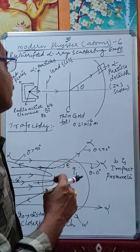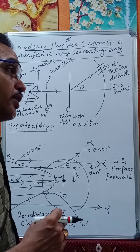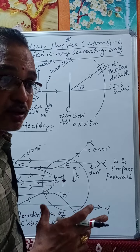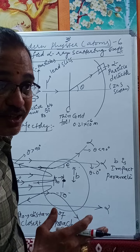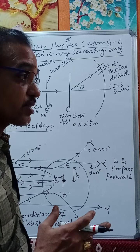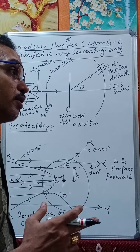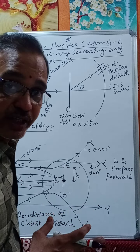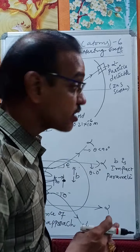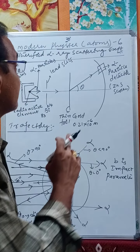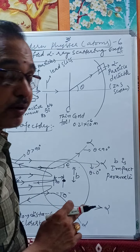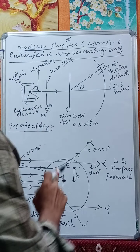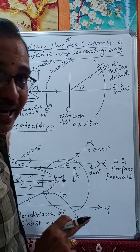In the last class, lecture 5, we discussed the various spectral lines, number of transitions, drawbacks, and the fine structure constant. Now let us see Rutherford's alpha ray scattering experiment.